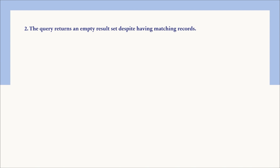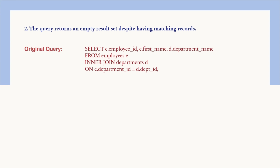Now let's move on to the second question. The query returns an empty result set despite having matching records. You're given a query — you can pause the video to try the solution. The query gives an empty result set despite having matching records in both tables.